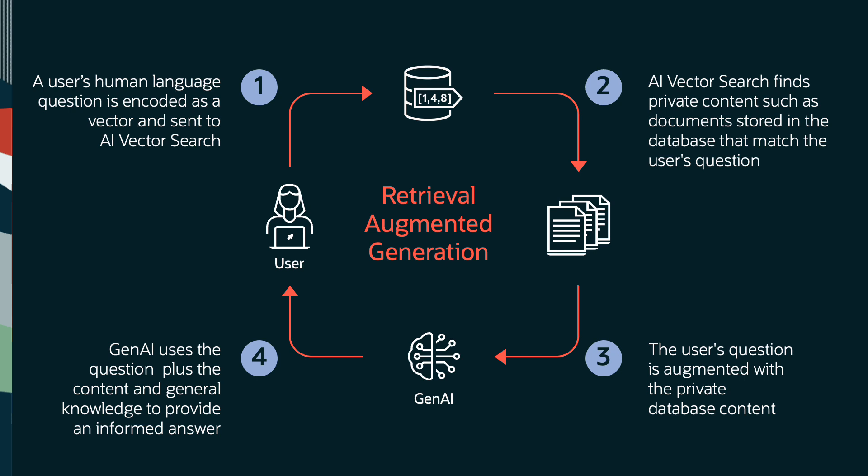Here's what the full process looks like. Your question is encoded as a vector and sent to AI vector search. AI vector search then finds relevant documents, and those documents are then sent to Gen AI along with your question. In other words, your question has been augmented with content from the customer support knowledge base. Gen AI then uses that relevant support information plus general knowledge to provide an informed answer to the user.